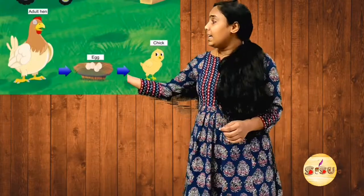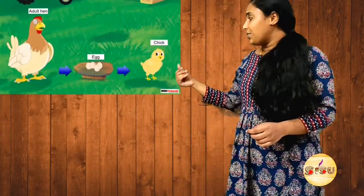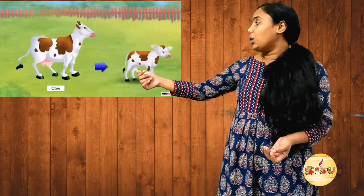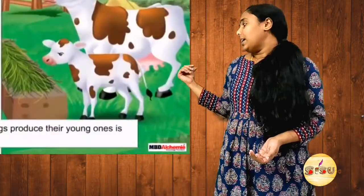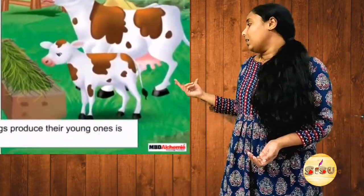The other method is laying eggs. By laying eggs — a hen lays eggs and from these eggs, chicks come out. A chick is the baby of a hen. Another example: a cow gives birth to its young one directly, and this is the baby of a cow.